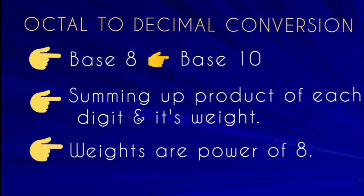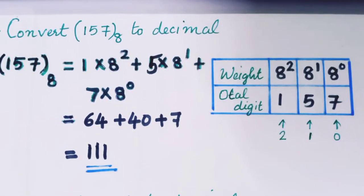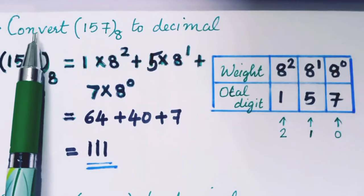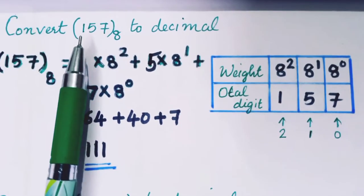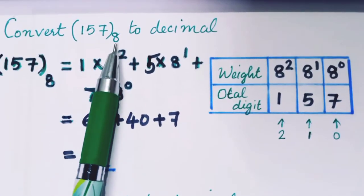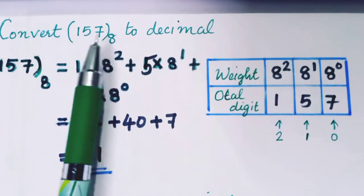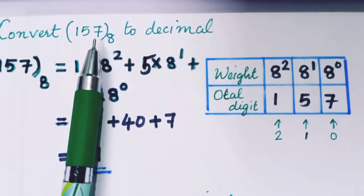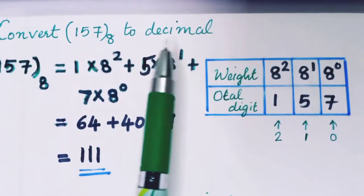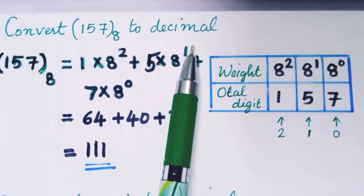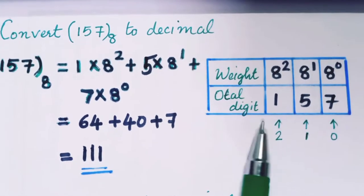Let's go to the example. Convert 157 in Base 8 to Decimal. That is, convert the octal number 157 to a decimal number. We will use a conversion table to do this.